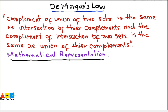We will start with the definition of De Morgan's Law: a complement of union of two sets is the same as intersection of their complements, and the complement of intersection of two sets is the same as union of their complements. You just need to understand its mathematical representation, and you can easily derive the definition yourself.